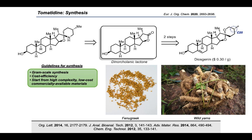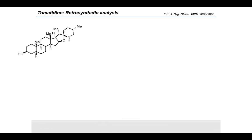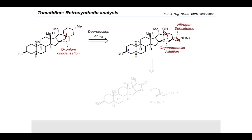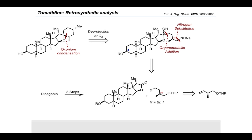In a biomimetic manner, we opted to generate the spiroaminoketal moiety as one of the last steps. Following deprotection at C3, breaking the C-N bond led us back to a hemiketal intermediate bearing a terminal amine, very similar to the biological intermediate. We intended to introduce the F-ring fragment through an organometallic addition of an asymmetric synthon bearing a protected oxygen. This alkylation would be followed by deprotection and nitrogen substitution. This adduct was traced back to the C3-protected lactone generated in three steps from diosgenin, and a five-carbon asymmetric synthon bearing a primary halide made from the THP alkene.